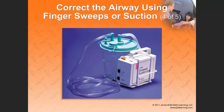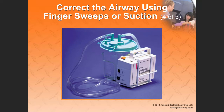The flexible suction catheter is preferred to go deeper into the patient's airway. Never suction beyond what you can see, and always create suction coming out of the patient's airway — never create suction going in. A portable mechanical suction device is definitely a life saver. If no suction is available, clear the airway with your gloved finger and you can use the airway device as a bite block.